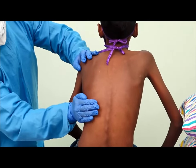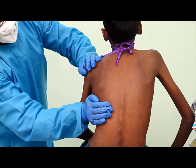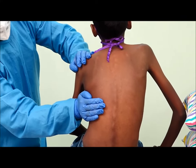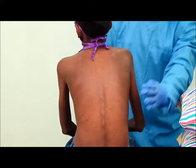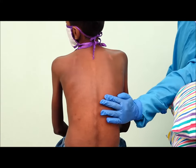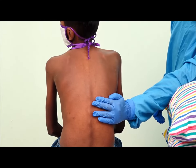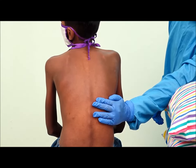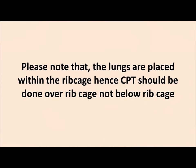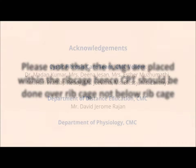Lower lobe, back, left and right, lower portion of the ribcage. Please note that the lungs are placed within the ribcage; hence CPT should be done over the ribcage, not below the ribcage.